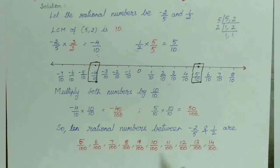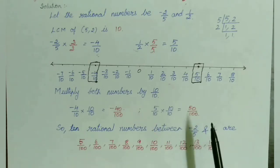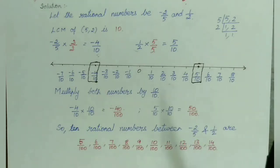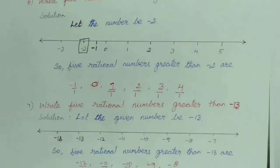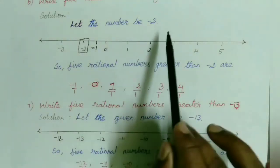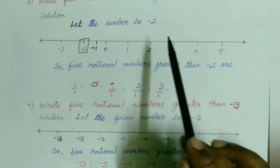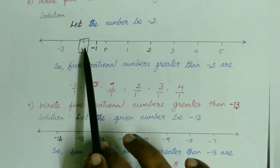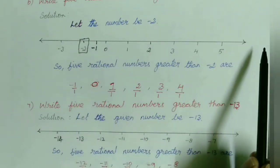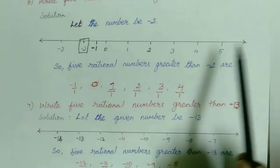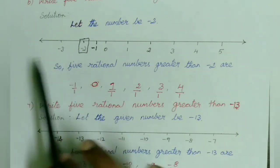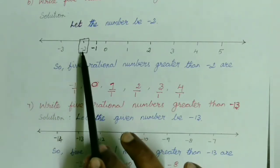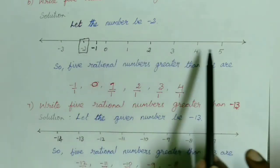If you want, you can write any other 10 rational numbers between minus 40 and 50. Now, write 5 rational numbers greater than minus 2. The given number is minus 2. I have drawn a number line where I have marked minus 2. We know that when we walk towards the right-hand side of the number line, the values are in increasing order.